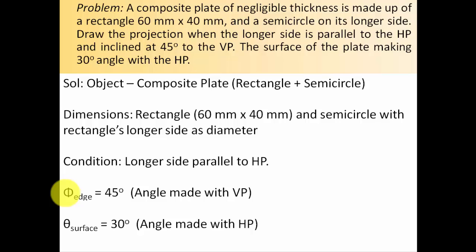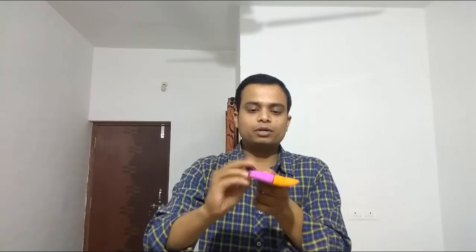In the next section I'll demonstrate how this object has been really kept. This is a composite geometrical plane made up of a rectangle — you can clearly see the rectangle — and the longer side of the rectangle also acts as a diameter for the semicircle. When solving projection of plane problems, you always need to make sure with which plane the surface is inclined. In this problem, the surface is inclined with the horizontal plane.